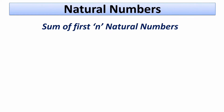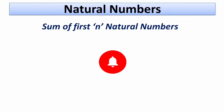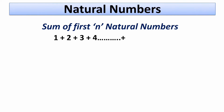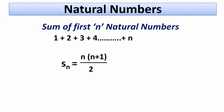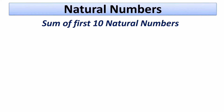Hello friends, this is Neelima, welcome to NJ Classes. Today I am going to explain an amazing trick of adding first n natural numbers without performing actual addition. You can obtain the result by using a simple formula: Sn equals n times (n plus 1) divided by 2, where n is any natural number. Let's see one problem for better understanding.